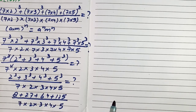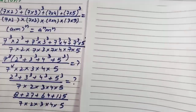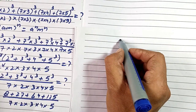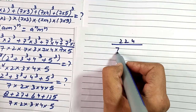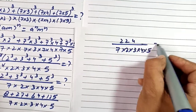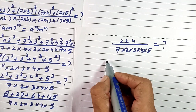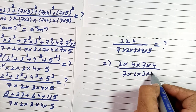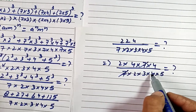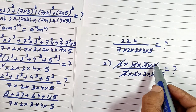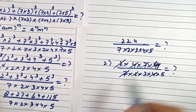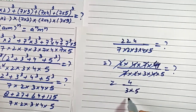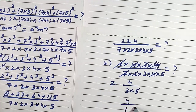Adding all the numerator terms we get 224. So we have 224 divided by 7 × 2 × 3 × 4 × 5. In the place of 224 we can write 2 × 4 × 7 × 4, which equals 224. After cancellation, 7 cancels with 7, 4 cancels with 4, and 2 cancels with 2, leaving 4 in the numerator. In the denominator we are left with 3 × 5, giving us 4/15.